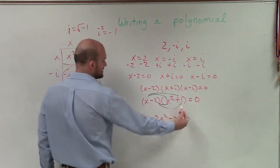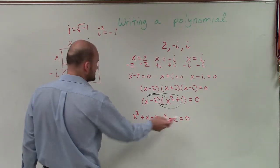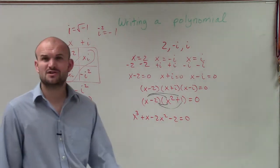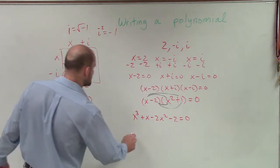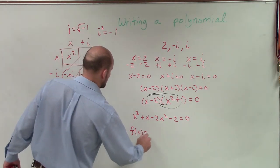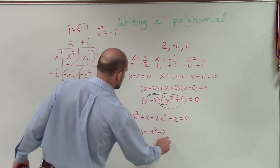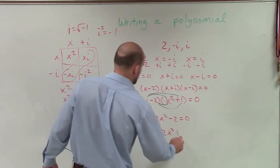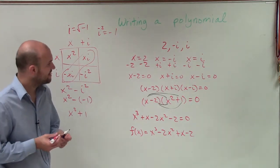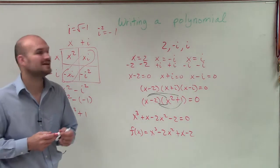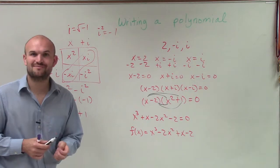Now I'll just make sure I write these in descending order of my exponents. And then also, I don't want to write my polynomial equal to 0 because we only did that to find the zeros. I want to write it as with this name of the function. So I'll write f of x equals x cubed minus 2x squared plus x minus 2. So there you go, ladies and gentlemen. That is how you write a polynomial given some zeros, including imaginary. Thanks.